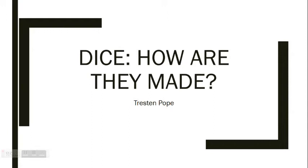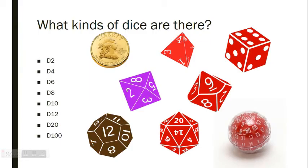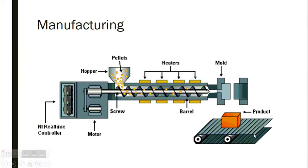Hello, my name is Treston Pope, and today we'll be going over how dice are made. First off, what kinds of dice are there? There's the D2 classic coin, D4 pyramid, D6 your average cube, D8 eight-sided die, D10 ten-sided die, and going on from there the D12, D20, and the very odd D100.